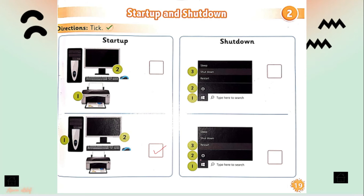Now look here — we have the shut down exercise with three steps in each option. One option says: click Start button, then Power button, then Shut Down. The other says: Start button, Power button, then Restart. Which one is correct — Restart or Shut Down? Of course Shut Down — this one is the correct one. That's it. Try to solve it in your book.